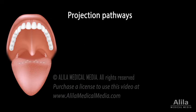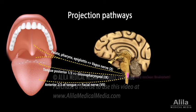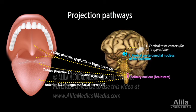Depending on the location of the taste buds, nerve fibers carrying taste signals move along cranial nerves 7, 9, or 10 to the solitary nucleus of the brain stem. From there, second-order neurons project to two destinations: the thalamus, where they synapse with third-order neurons which continue to higher cortical taste centers, and the hypothalamus and amygdala, where they trigger autonomic reflexes such as salivation, gagging, and vomiting, and provide input for regulation of eating behaviors.